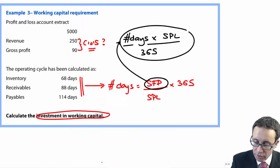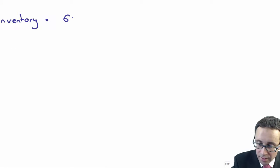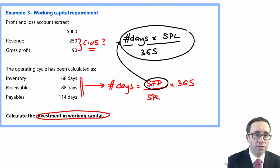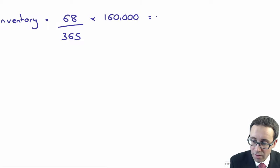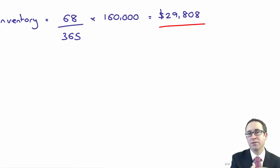Let's work out our investment in inventory. Inventory, we stock for 68 days, so it's 68 divided by 365, and we multiply by our cost of sales figure, which is 160. So 68 divided by 365 times 160,000 gives me an investment of 29,808. That's the amount of inventory that we have that will replenish every 68 days.